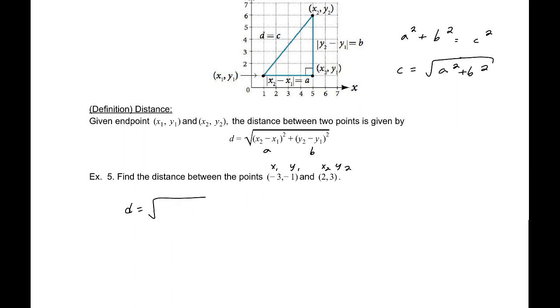So, this would be 2 - (-3) squared plus y₂, which is 3, minus y₁, which is -1 squared. And that would be the square root of 5 squared. I'm going to go ahead and leave this in parentheses, but we don't need it since it is positive there. 5² + 4².